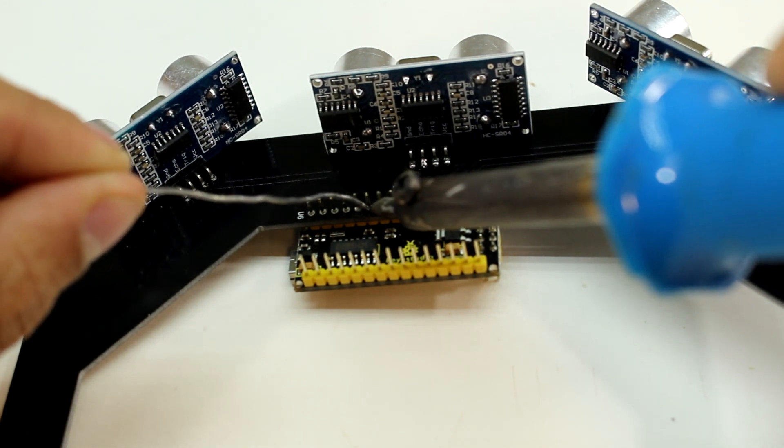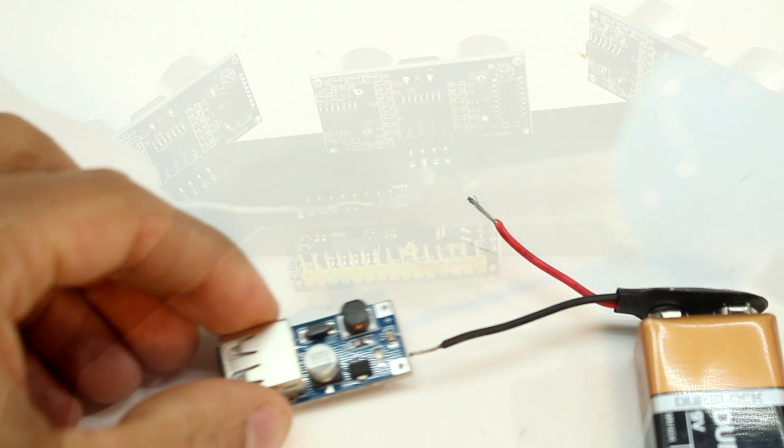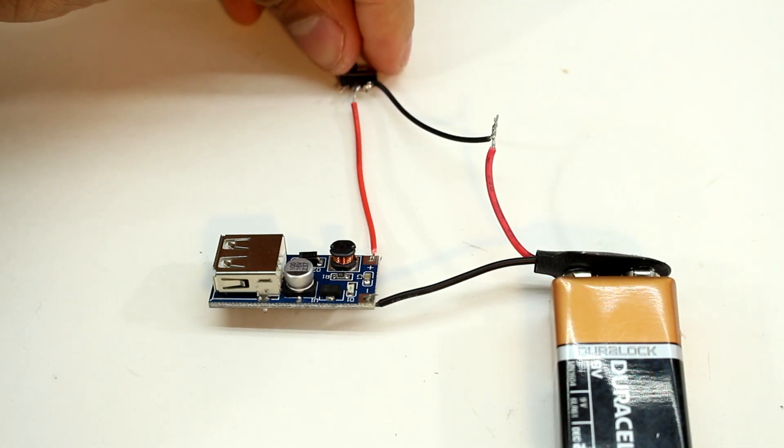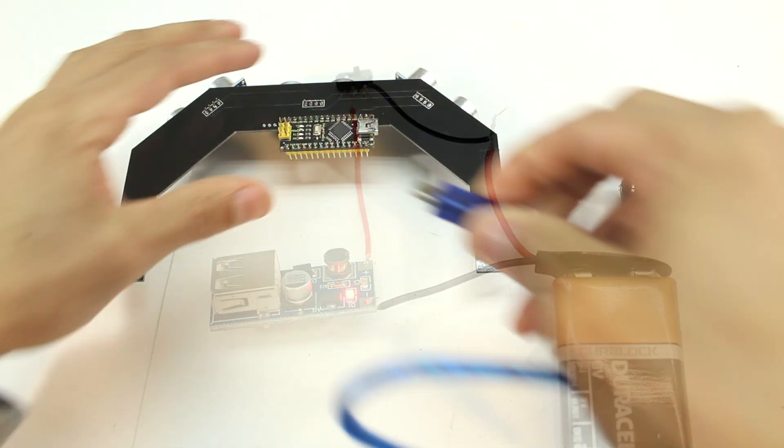The Arduino basically acts as a mini computer which we can program to do whatever we want. Next we need some way to lower the voltage so that we're not giving our Arduino too much power. For this I'm going to use a boost converter.